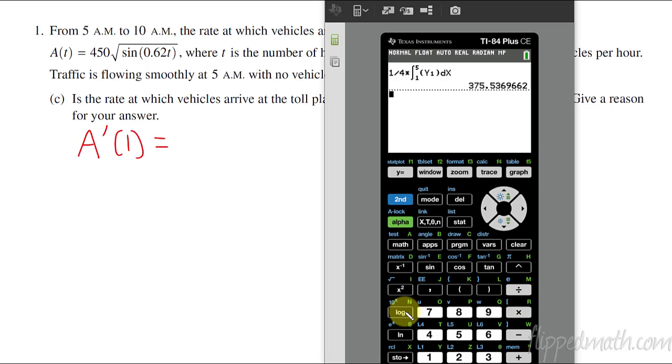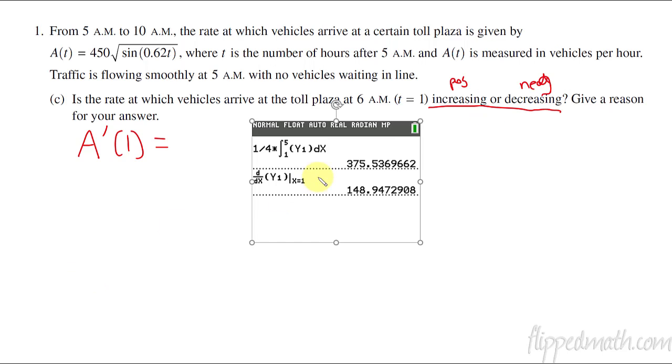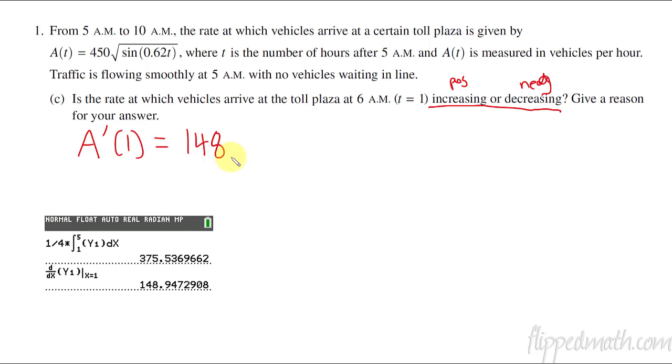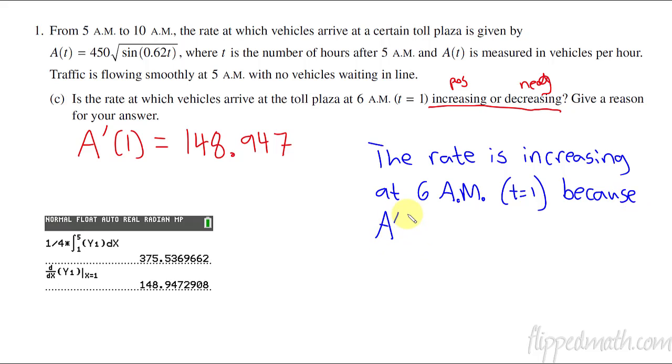So A prime of 1, what does that equal? So I grab my calculator, and in this instance I'm going to go math 8, math option number 8. That will give me my derivative with respect to x. Bring up my y variables, y variables function, function 1. And then I'm evaluating it at the number 1. So boom, there's my answer. So I get 148.947, truncated and rounded as the same. Do I have to know exactly what number this is? Really, I just need to know if it's positive or negative. But they will often give you points based on did you find the actual value of the first derivative.